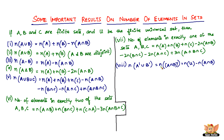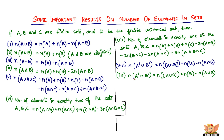The next result: N of A complement union B complement equals N of A intersection B whole complement, which equals N of U minus N of A intersection B. And the final one: N of A complement intersection B complement equals N of A union B whole complement, which equals N of U minus N of A union B.